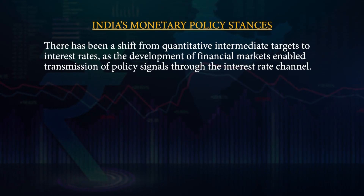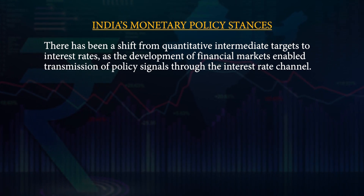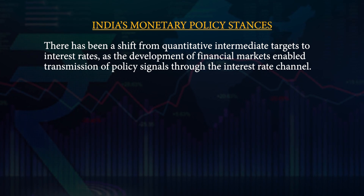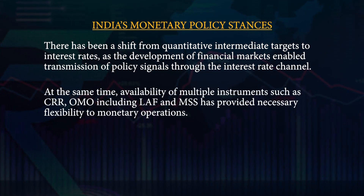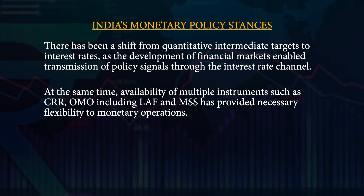As the changing framework of monetary policy in India continued, from a policy of monetary targeting to a policy of augmented multiple indicators approach, the operation targets and processes also underwent a change. There was a shift from quantitative intermediate targets to interest rates, as the development of financial markets enabled transmission of policy signals through the interest rate channel. At the same time, availability of multiple instruments such as CRR, the OMO including LAF, had provided the necessary flexibility to monetary operations. While monetary policy formulation basically was a technical process, it became more consultative and more participative with the involvement of market participants, academicians, and experts.